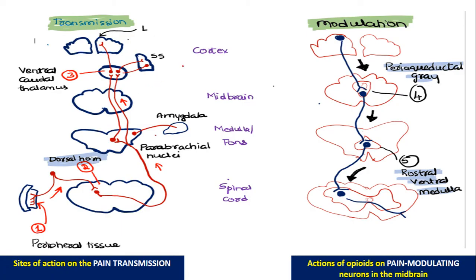There are spinal as well as supraspinal mechanisms. First we will see about the supraspinal mechanism. Morphine produces analgesia by acting on the pain transmission pathway and also by modulating the pain transmission pathway.